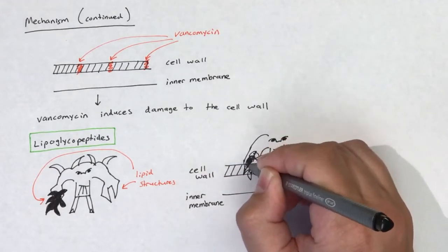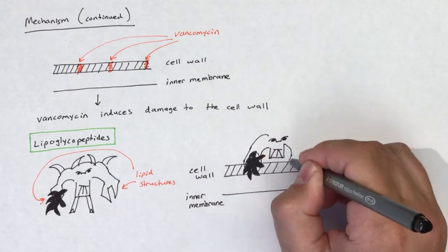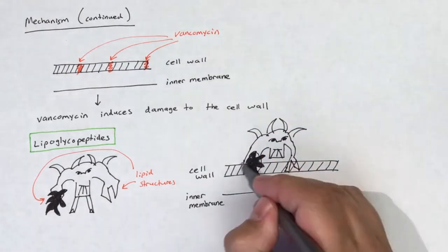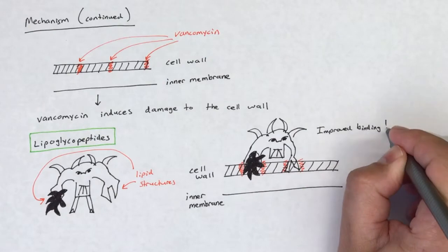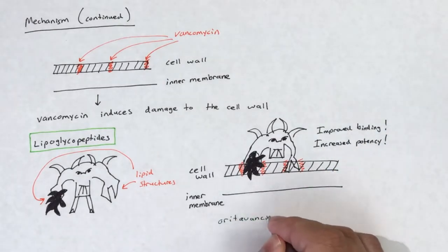Both oritavancin and telavancin directly disrupt the bacterial membrane, allowing them to have a more rapid cidal effect when compared to dalbavancin and vancomycin.